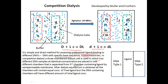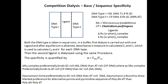The bound ligand concentration differs in both DNA-containing chambers because binding affinity to each DNA differs — this is used for base specificity and sequence specificity analysis. For base specificity, two types of DNA are used: ML DNA (Micrococcus luteus), which is GC-rich, and CP DNA (Clostridium perfringens), which has 31% GC content and is thus AT-rich. Both DNAs are taken at equal concentration in buffer and dialysis is carried out with one type of ligand at a time.